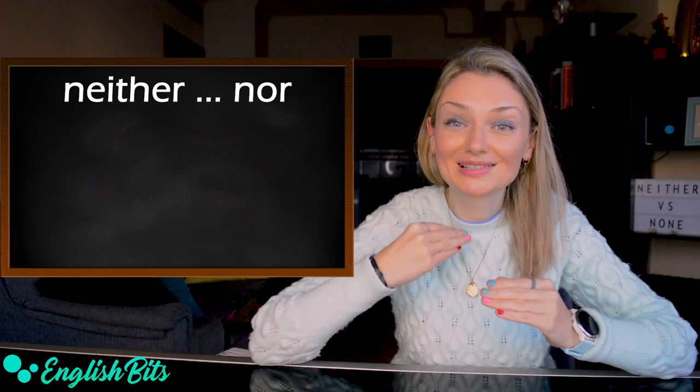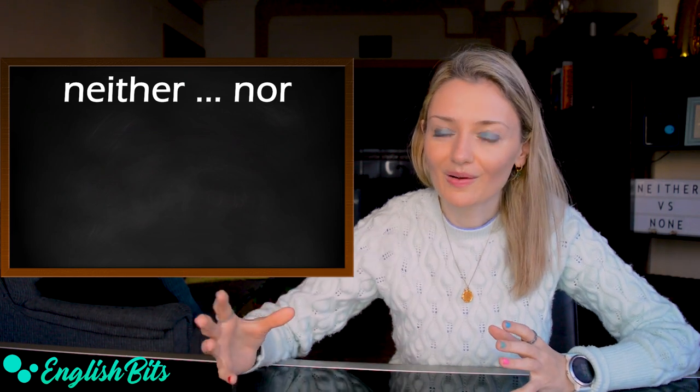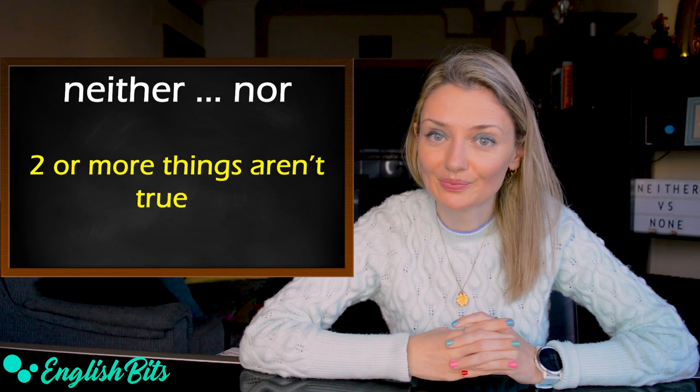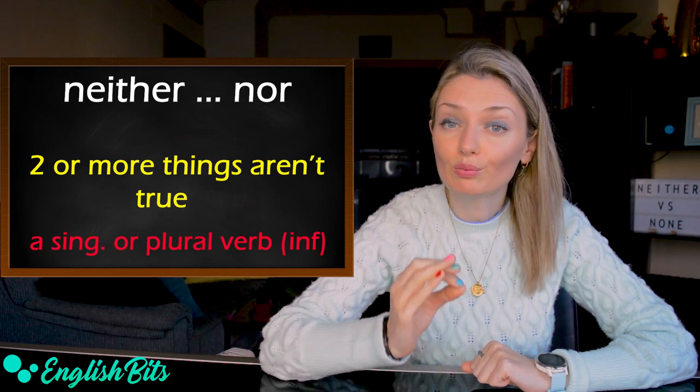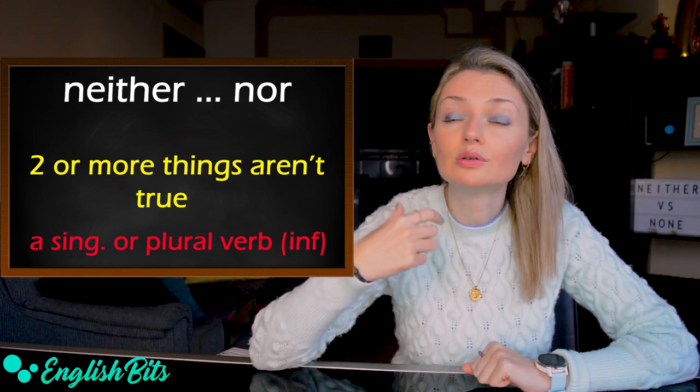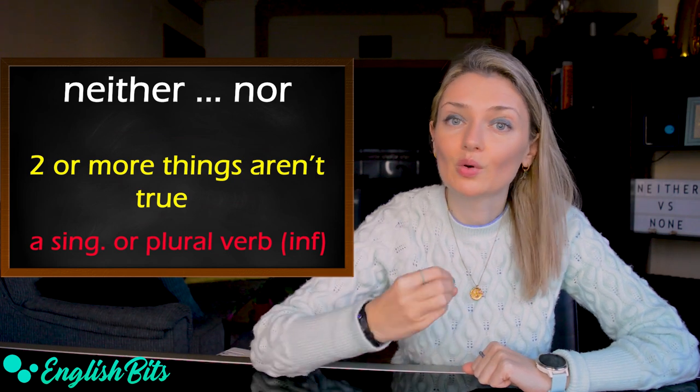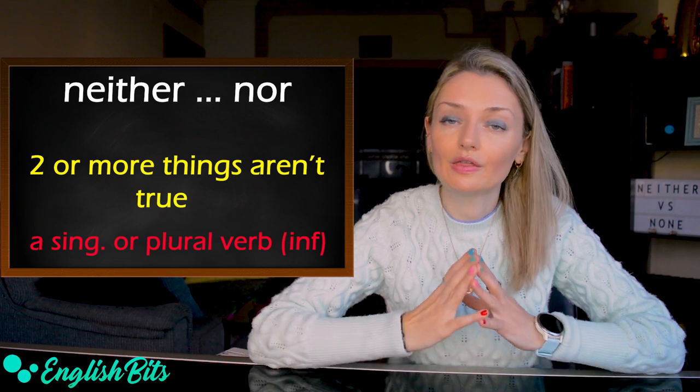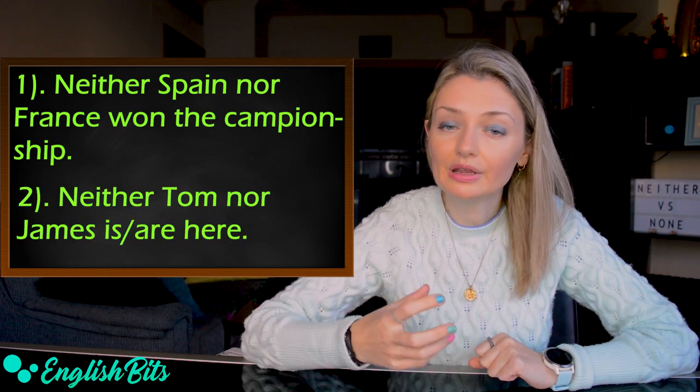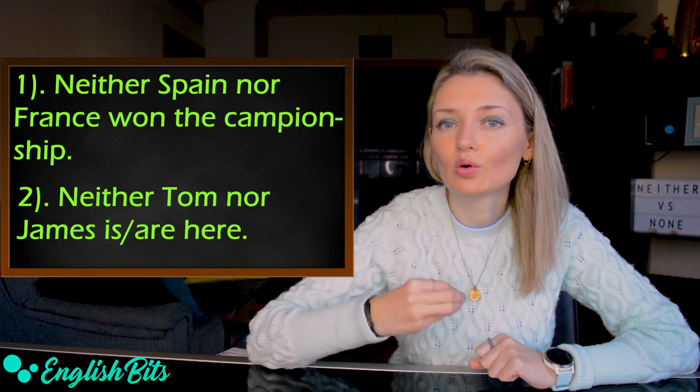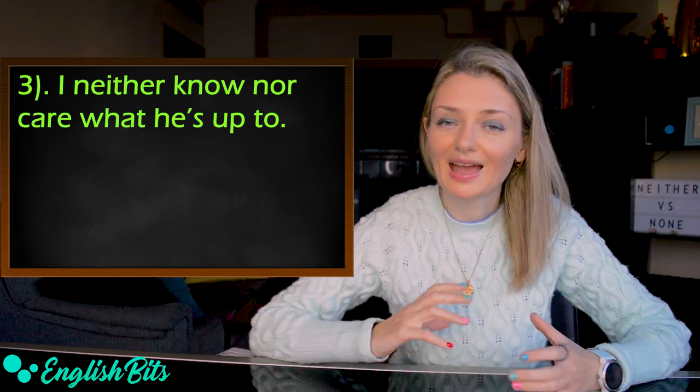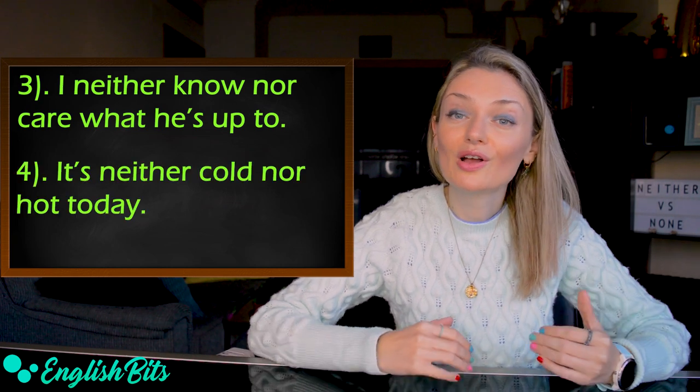And now I've got a bonus structure for you: neither nor. We use it to say that two or more things are untrue. And after this structure, we can use both a singular or a plural verb, and once again, a plural one is more common in spoken English. And now a few examples. The first one: neither Spain nor France won the championship. Neither Tom nor James is or are here. I neither know nor care what he's up to. And one more example here: it's neither cold nor hot today.